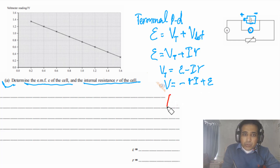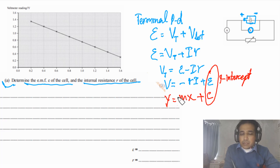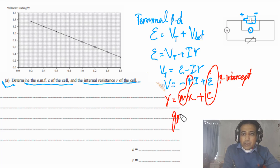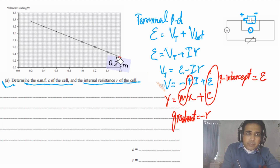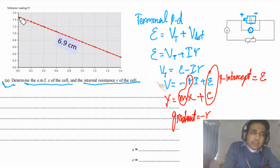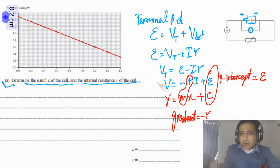Comparing V_T = −r·I + E with y = mx + c: the y-intercept represents EMF and the gradient represents −r. To find the y-intercept, we extend the line on the graph. Reading from the graph at the y-intercept gives approximately 1.5 volts. So EMF ≈ 1.5 volts. You can also see from the equation that when current equals zero, V_T = E, confirming this reading.